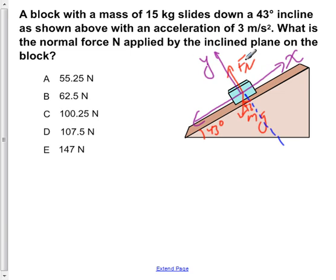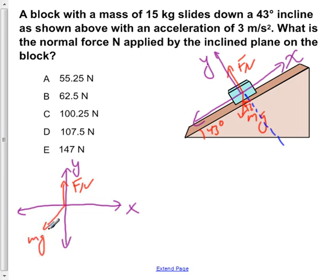Now if we choose this set of axes, we can then see that if we draw it normally, we have the y here, the x here, our Fn would be pointing straight up. We would then have mg acting in a direction like this, at an angle of 43 degrees.